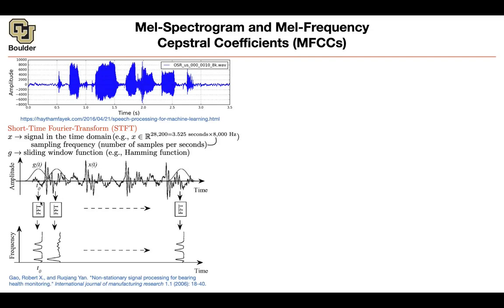Then you're going to do fast Fourier transform on that short signal. You're going to keep the time, and the other axis is going to be frequency. Let's take the second frame — let's say the window you're choosing is 25 milliseconds. That's 0.025 seconds. You take that many seconds, multiply it by your sampling rate, and that's going to give you a vector that is 200-dimensional. So each one of these windows is going to be 200-dimensional.